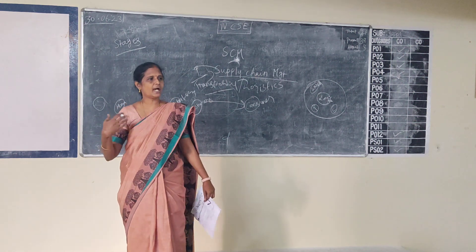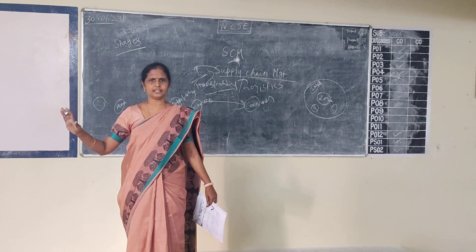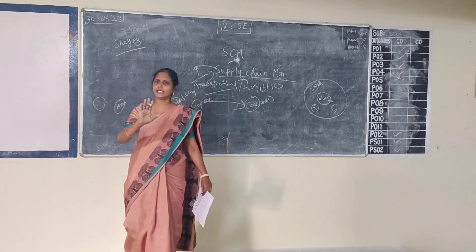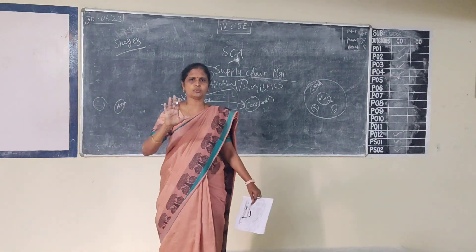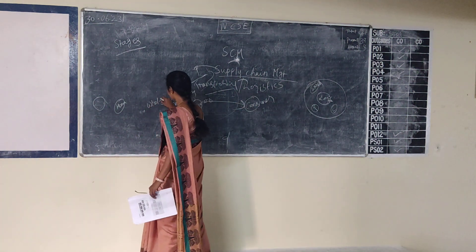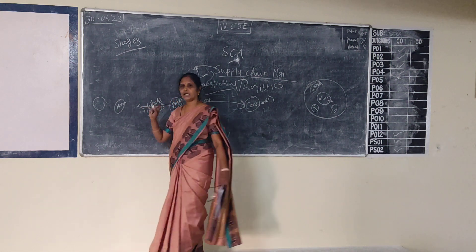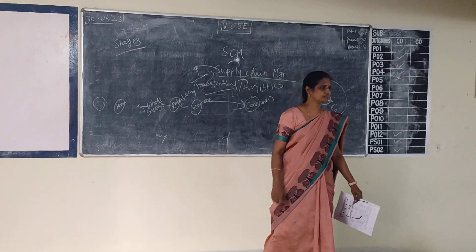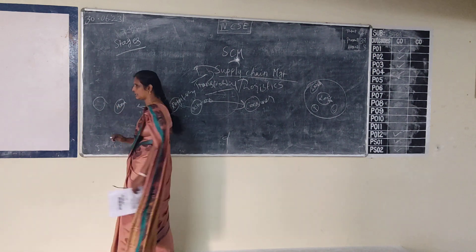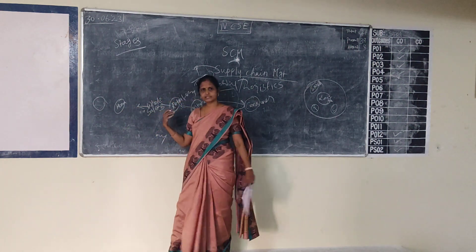Retailers — where do the retailers buy those products? In a retail shop, we will be having multiple products. Where do we buy those materials from? Wholesalers. Where do the wholesalers buy from? Sometimes directly from the manufacturers. From the plant, they will be moving the goods to the wholesaler shop.